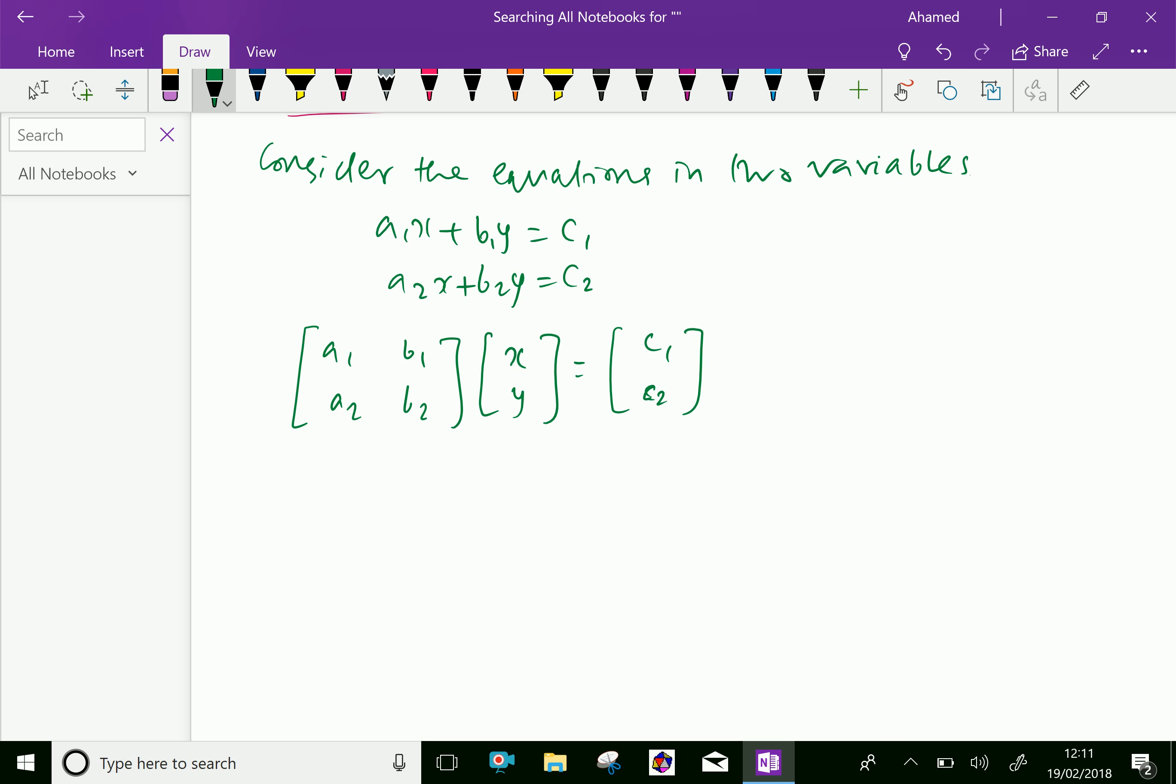Or in general, Ax equals B, where A is two by two matrices and x and B are two by one matrices.